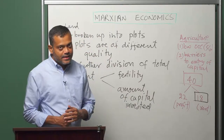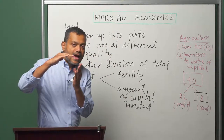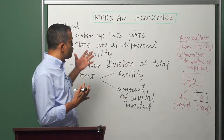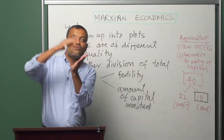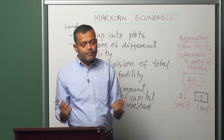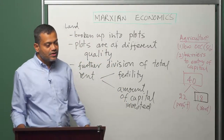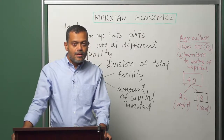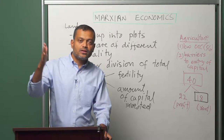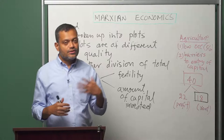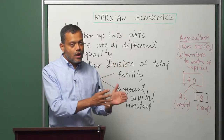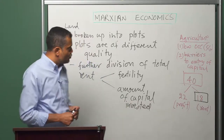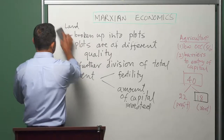This rent we have seen is precisely the surplus profit — the profit available to agriculture which is over and above the average rate of profit. Marx's analysis also shows that this surplus profit, which is appropriated as rent by landowners, can be broken down further into three parts: differential rent of variety one, differential rent of variety two, and absolute rent. Let us look at those three components of this total rent.